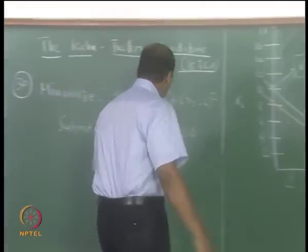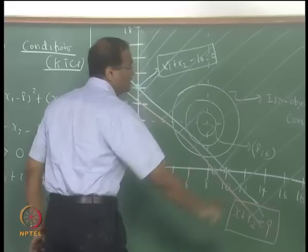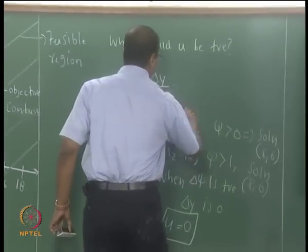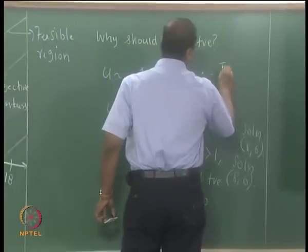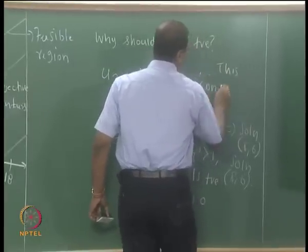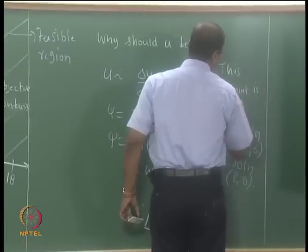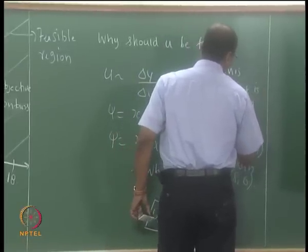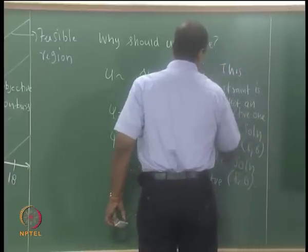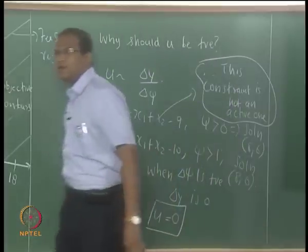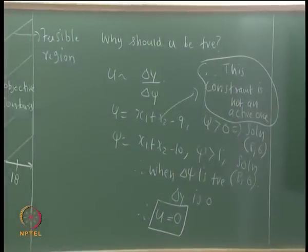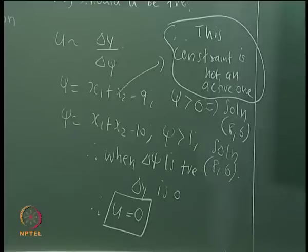Now let us go to problem 31. This constraint is not binding, not an active one. I only partly answered your question — if the constraint is not active, u = 0. But I have not yet answered: if the constraint is active, why should u be positive?